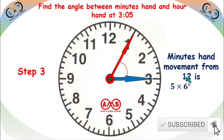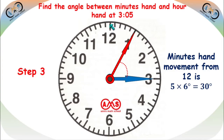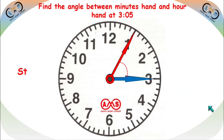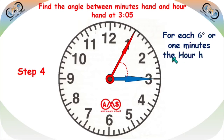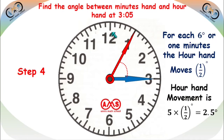Step 3: the minute hand movement from 12. The minute hand moves 1, 2, 3, 4, 5 steps from 12. Each step is 6 degrees, so the minute hand movement from 12 is 5 times 6, which is 30 degrees. Step 4: for each 6 degrees or 1 minute, the hour hand moves half a degree. There are 5 steps total, so 5 times half is 2.5 degrees. The hour hand moves 2.5 degrees forward for this minute hand movement.